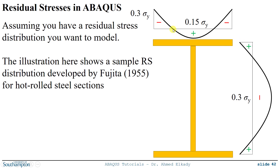These are stresses applied in the longitudinal direction — uniaxial stresses on the cross section. This is a sample parabolic distribution based on the reference by Fujita 1955 for hot rolled steel sections. You could have any kind of residual stress distribution from any reference, with any shape — linear or non-linear — or you might want to model some kind of initial stress field for any reason in your model.